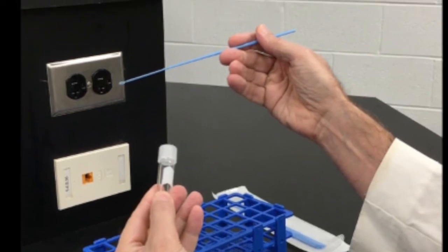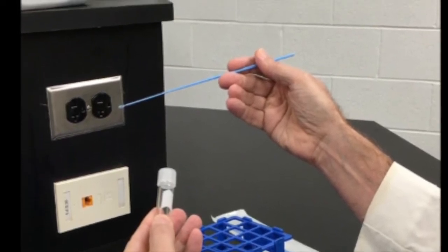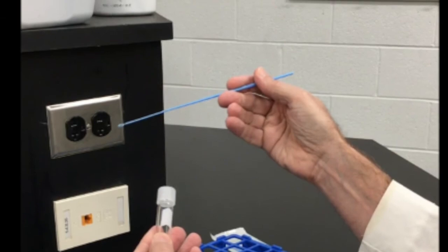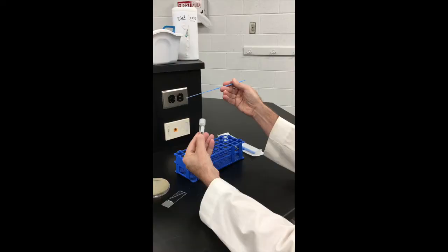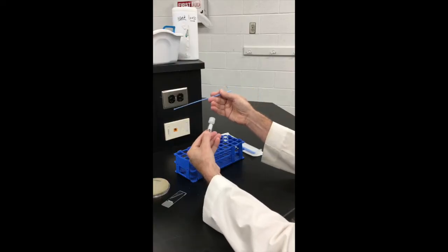Hold your loop in your other hand as shown, roughly the way you might hold a pencil. This leaves the little fingers of that hand free. You should use those to hold the cap of the tube.